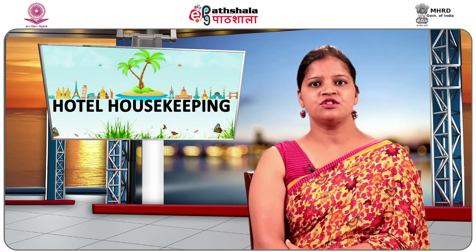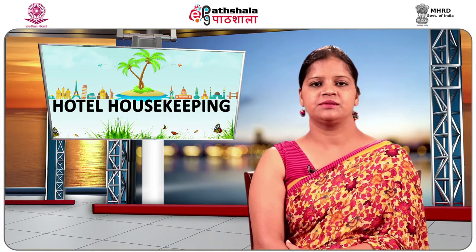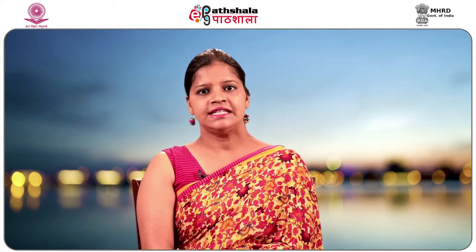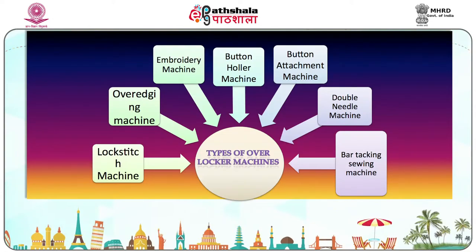Sewing machines are also divided into 8 types depending on their functions, meaning the types of stitches they make: lock stitch machine, overedging machine, embroidery machine, button hauler machine, button attachment machine, double needle machine, and bar tacking sewing machine.